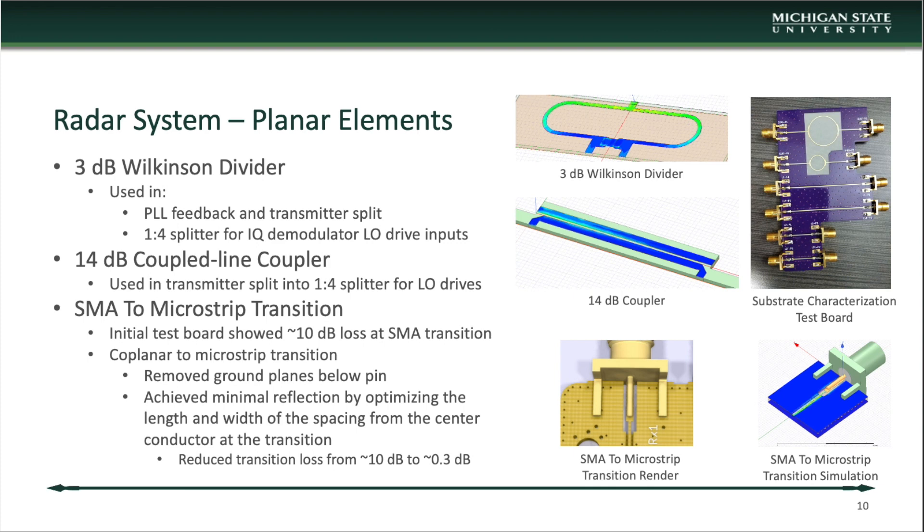The board utilized several distributed planar elements, which were chosen due to their ease of fabrication and high efficiency at RF frequencies. Each of these elements were designed and simulated using ANSYS HFSS. A 3dB Wilkinson RF power divider was designed and used in two locations. The first was to allow feedback from the output of the VCO and to be sent to the power amplifier to be transmitted. The second was utilizing a group of three cascaded power dividers to create a 1-4 splitter to drive the LO inputs on the down converter mixers. Additionally, a 14dB coupler was used to siphon off roughly 4% of the transmit power.